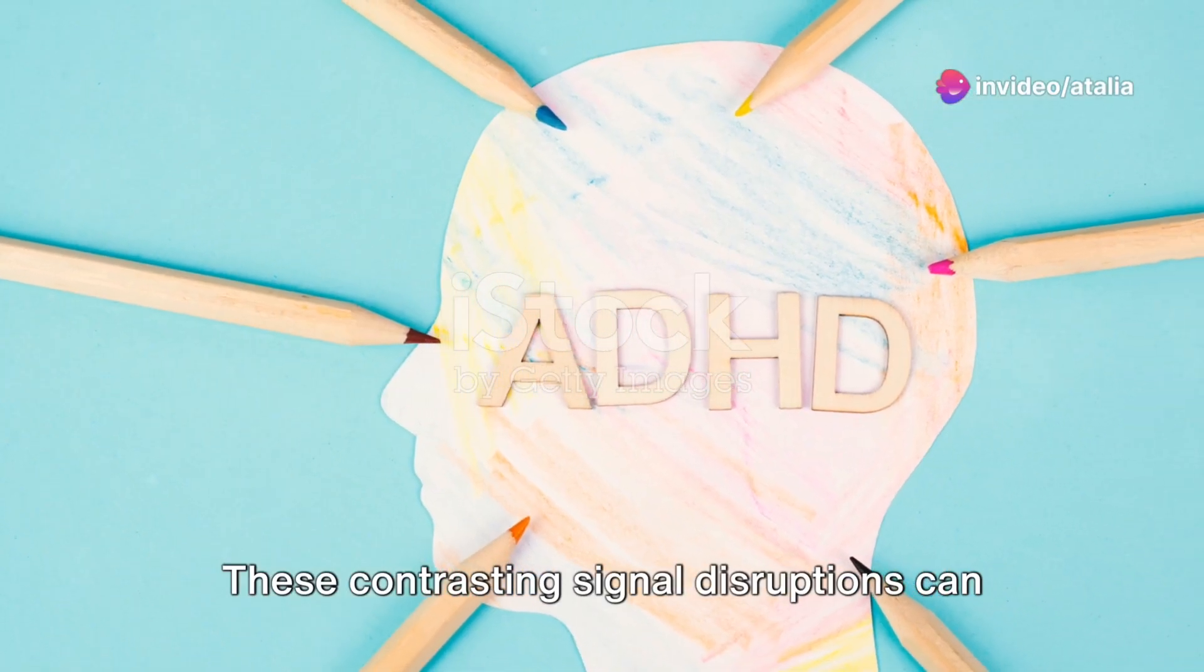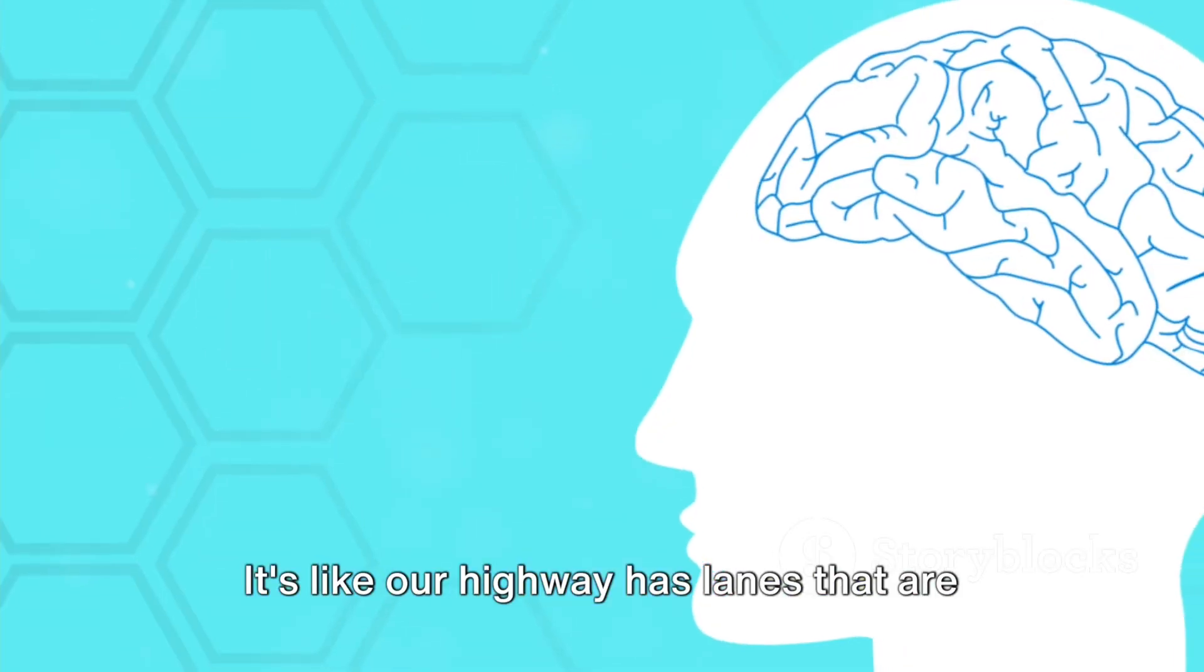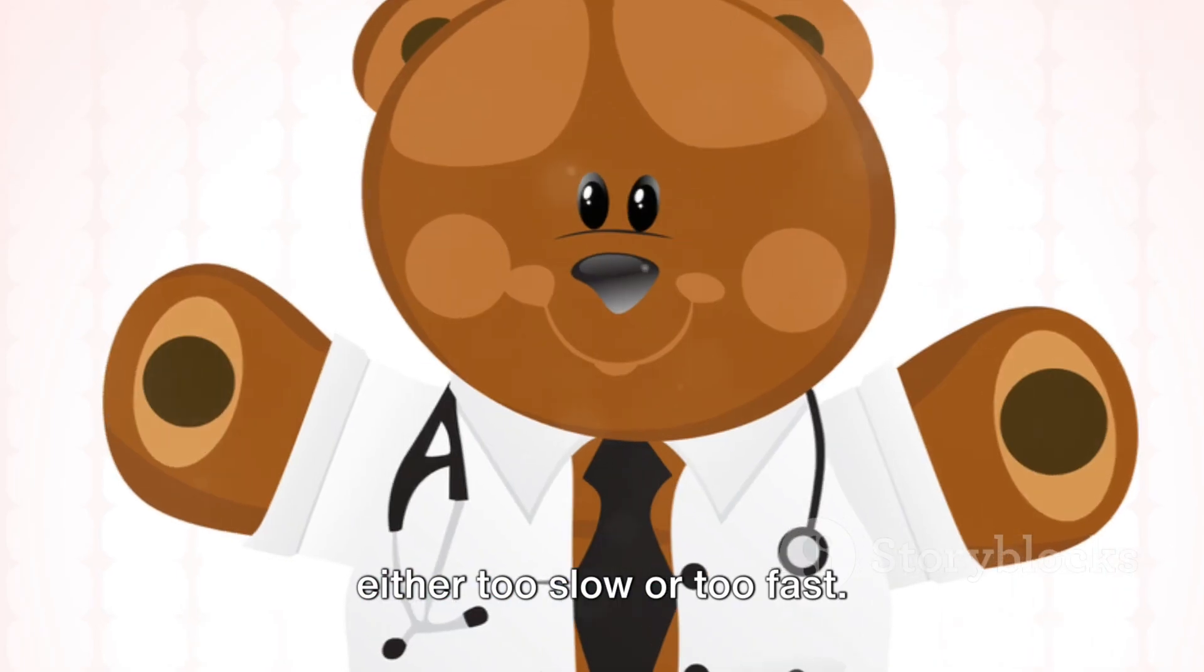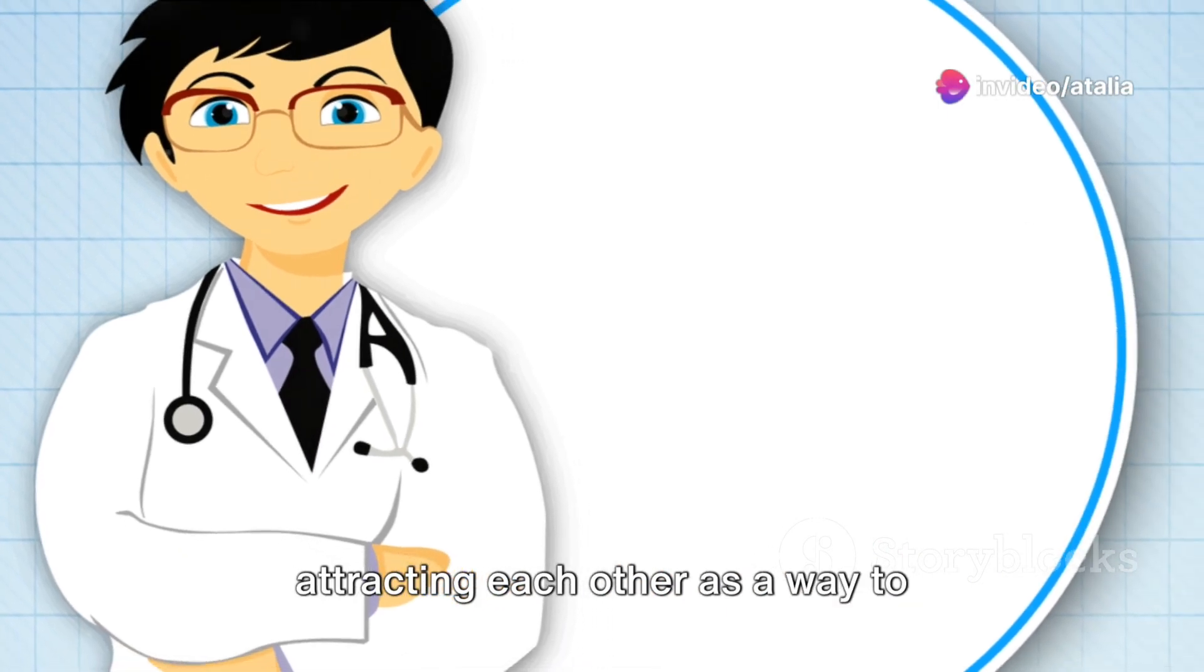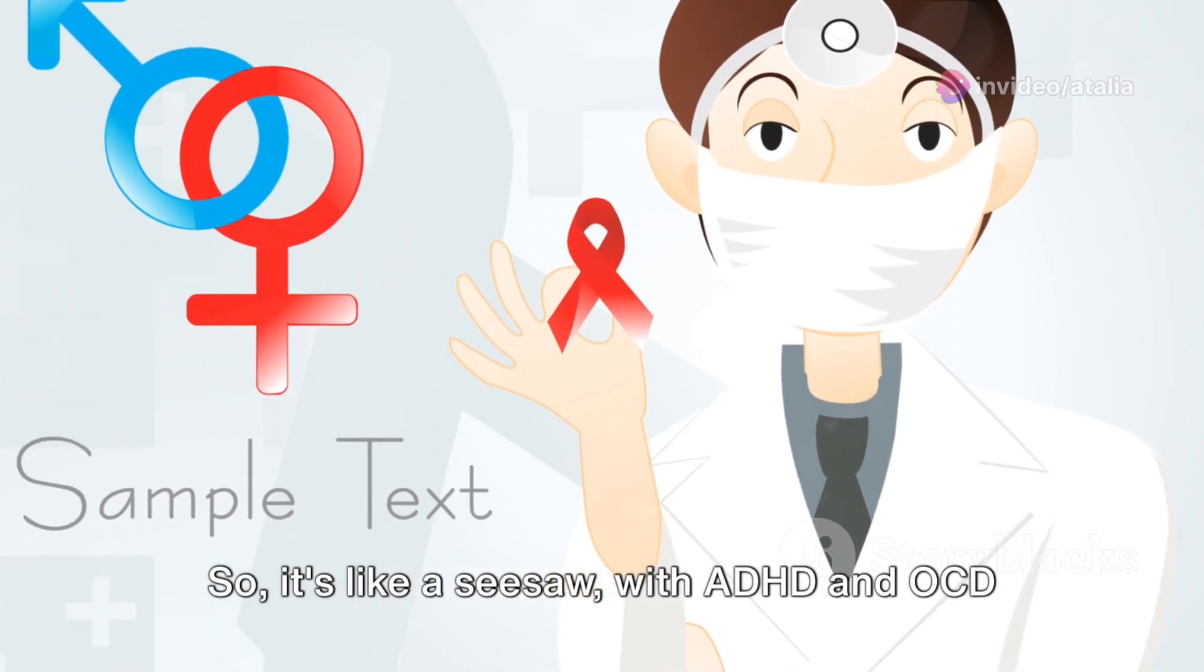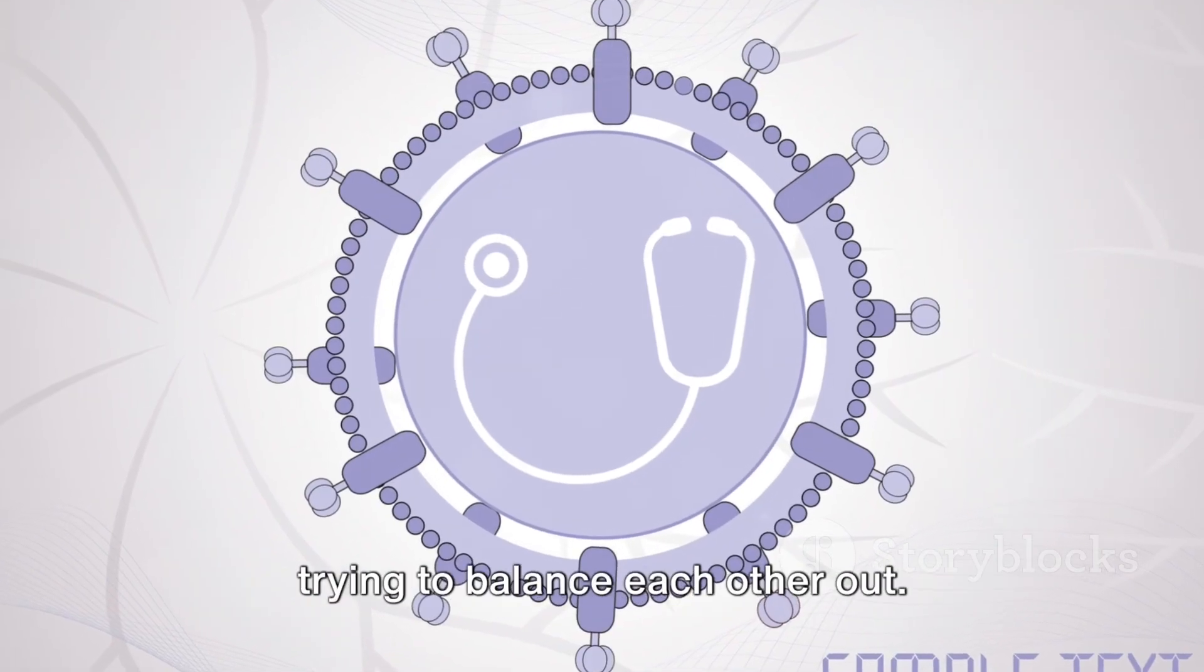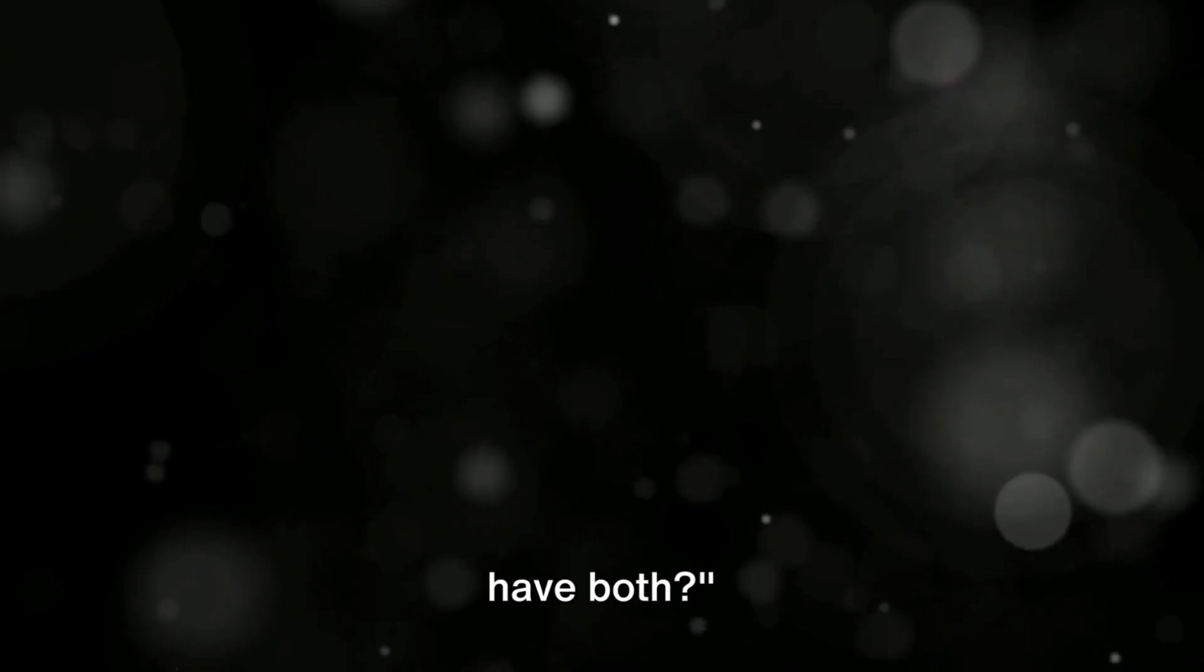These contrasting signal disruptions can create an imbalance. It's like our highway has lanes that are either too slow or too fast. This can lead to the two disorders attracting each other as a way to compensate, to try and bring some order to the chaos. So it's like a seesaw with ADHD and OCD trying to balance each other out. But what does this mean for people who have both?